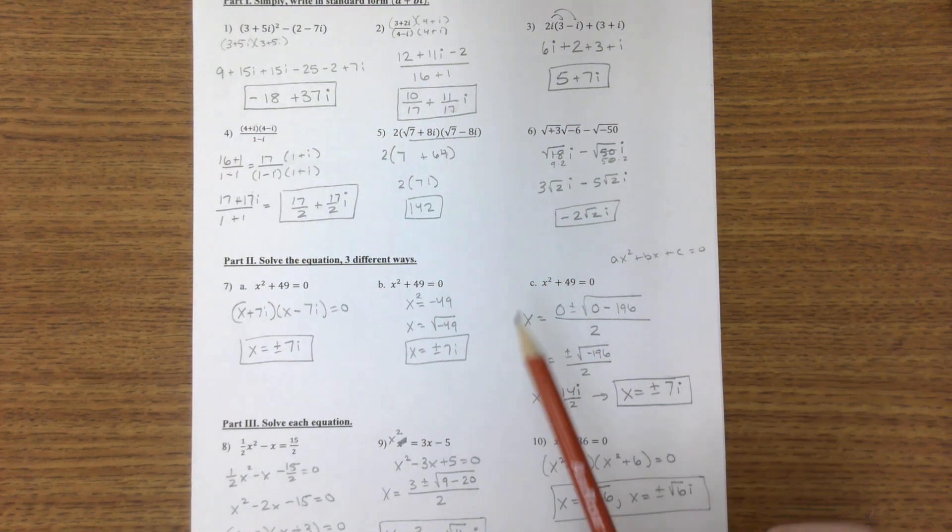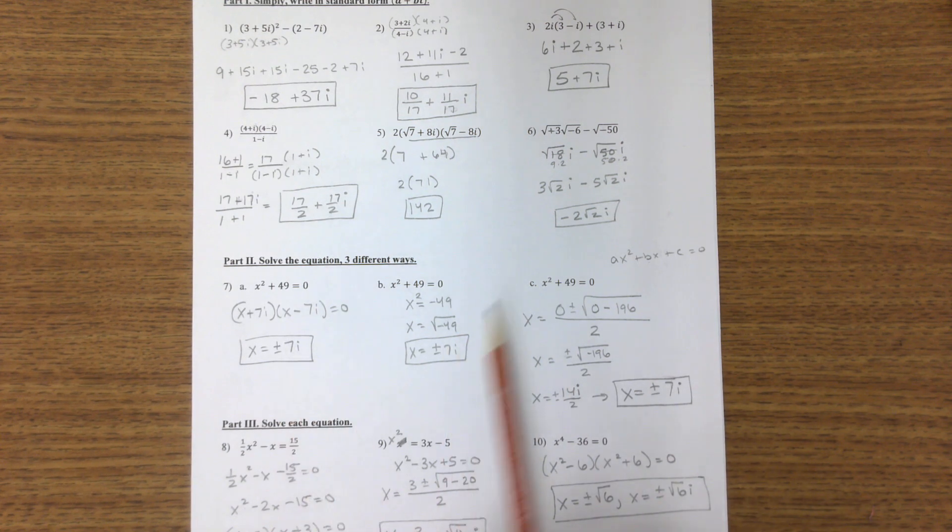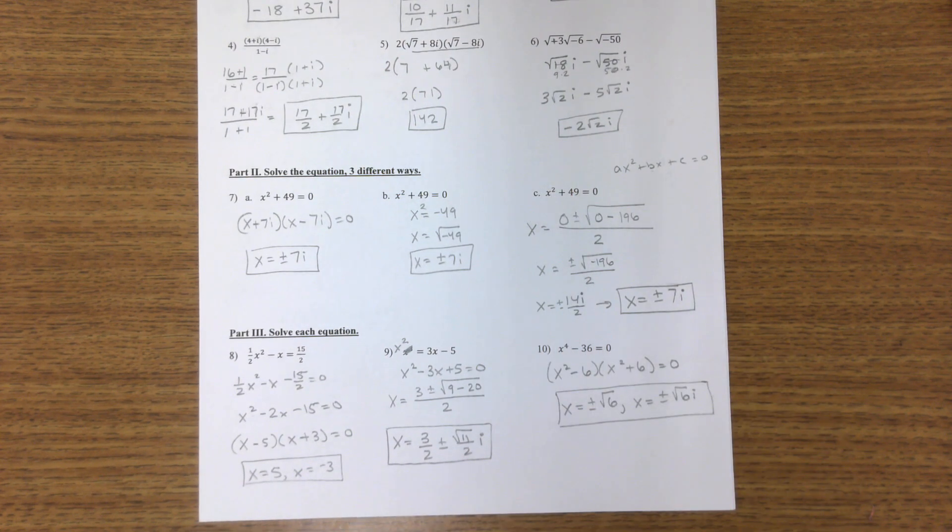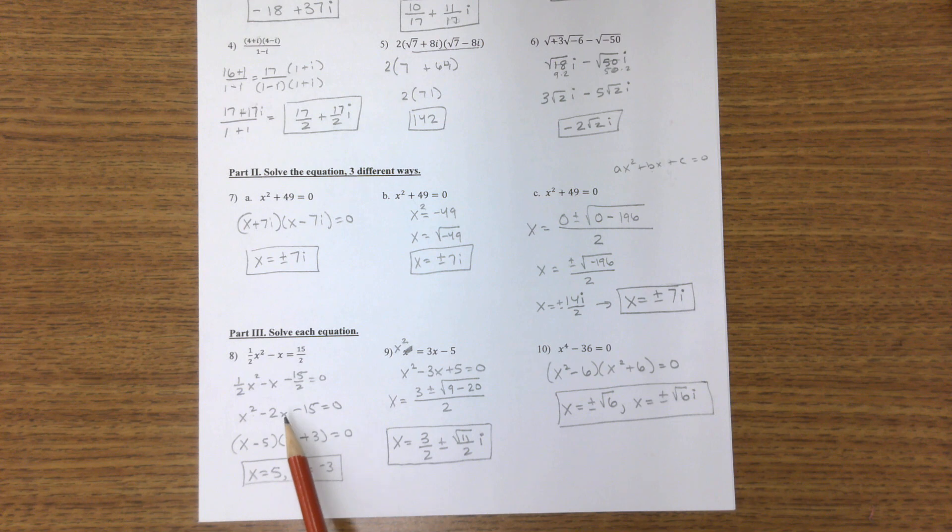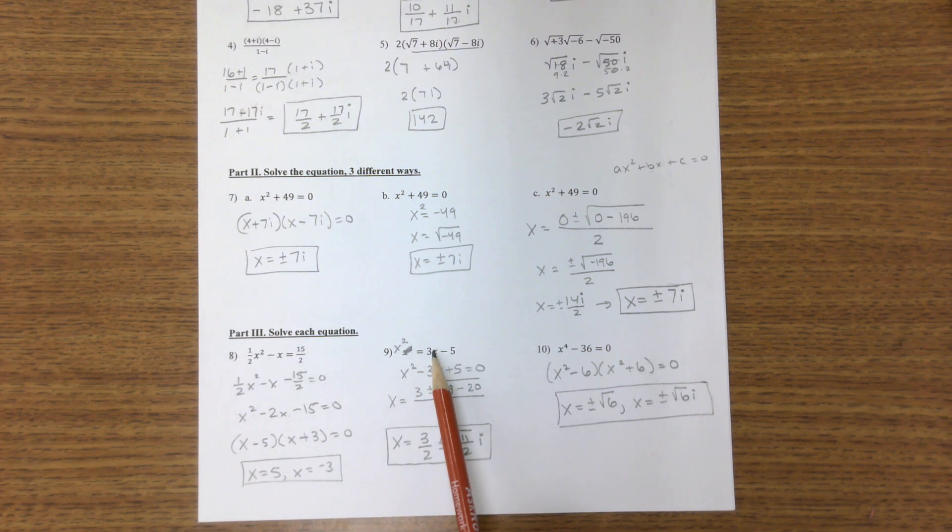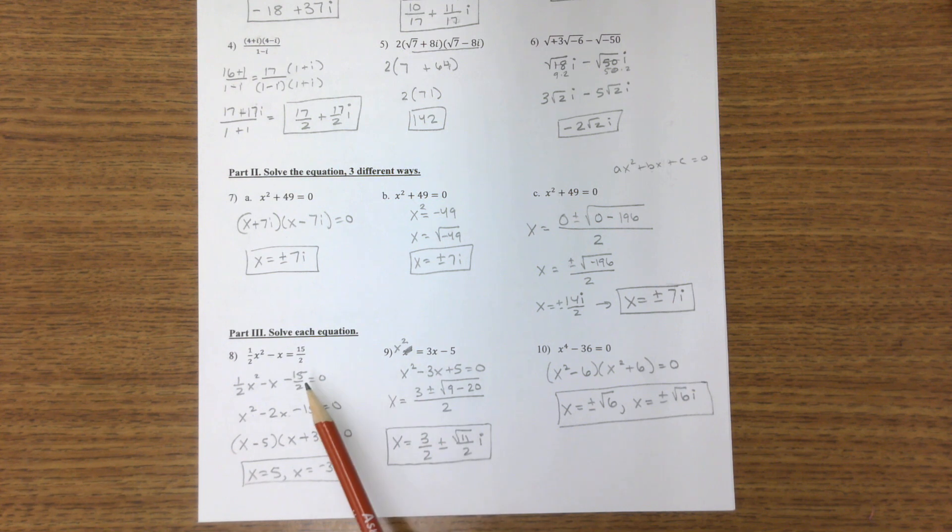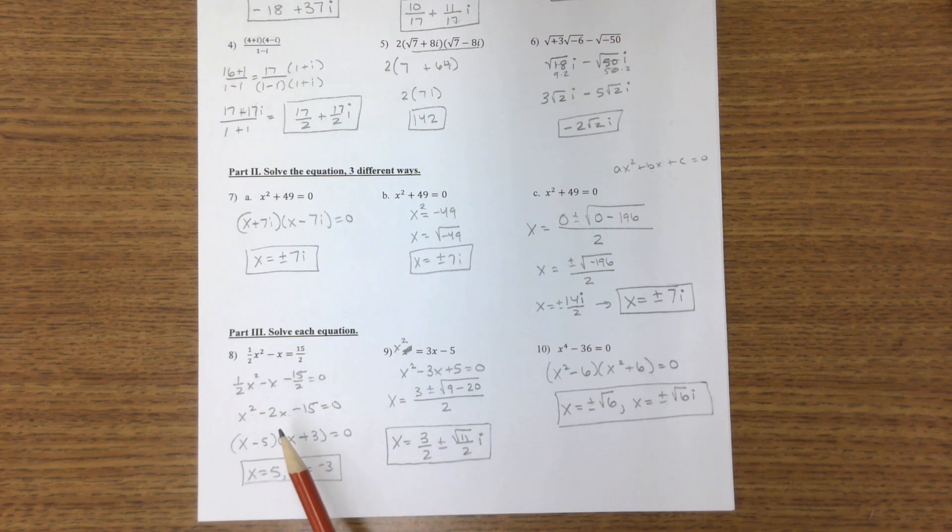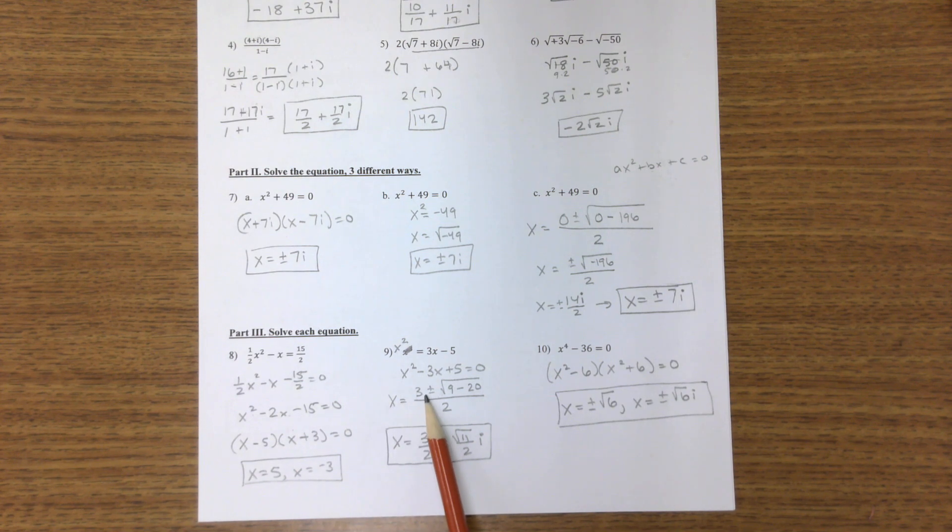All three ways you get plus or minus 7i. Down here, I subtracted this over, multiplied through a 2, and then I factored. But again, you could have done quadratic formula right there on this one. However, factoring will not work, so I have to do quadratic formula. Factoring is usually easier, quadratic formula always works.